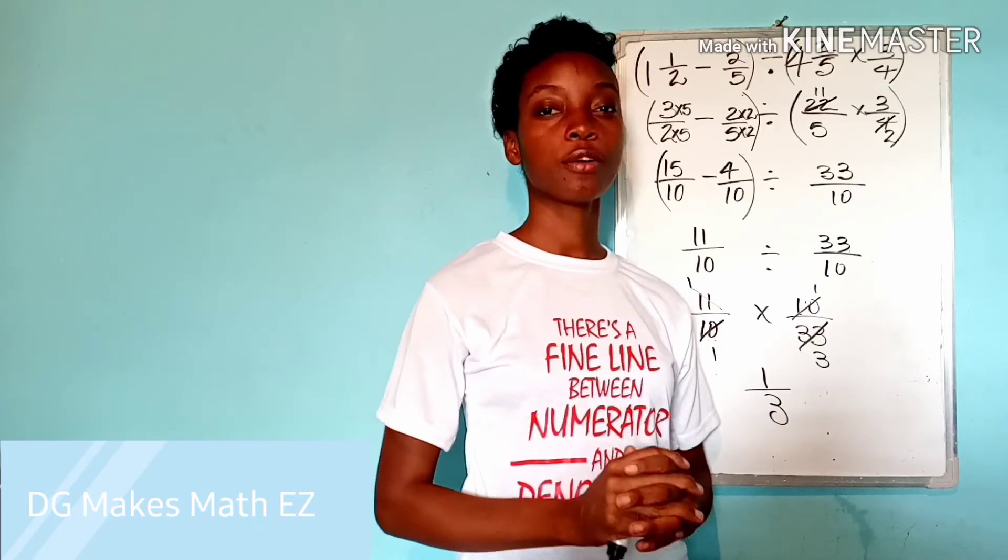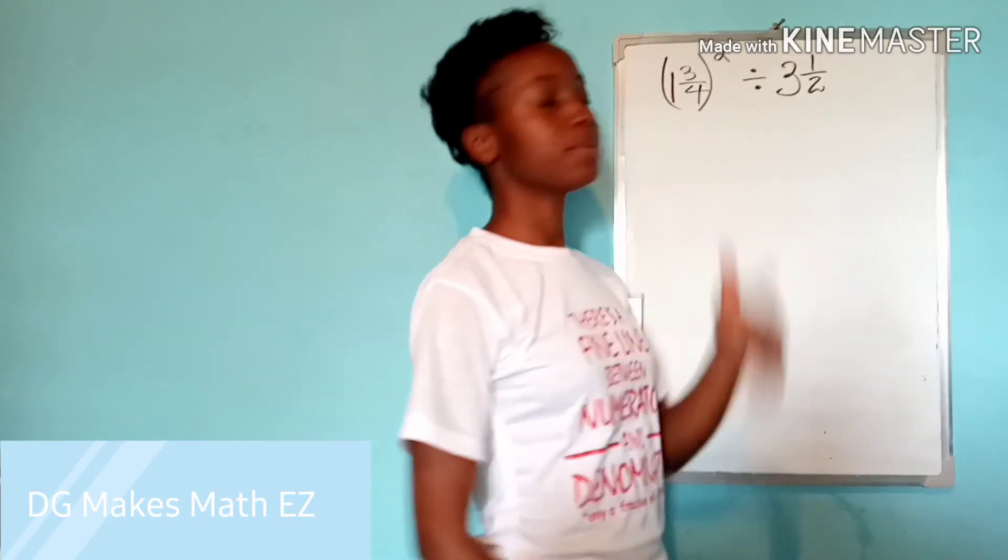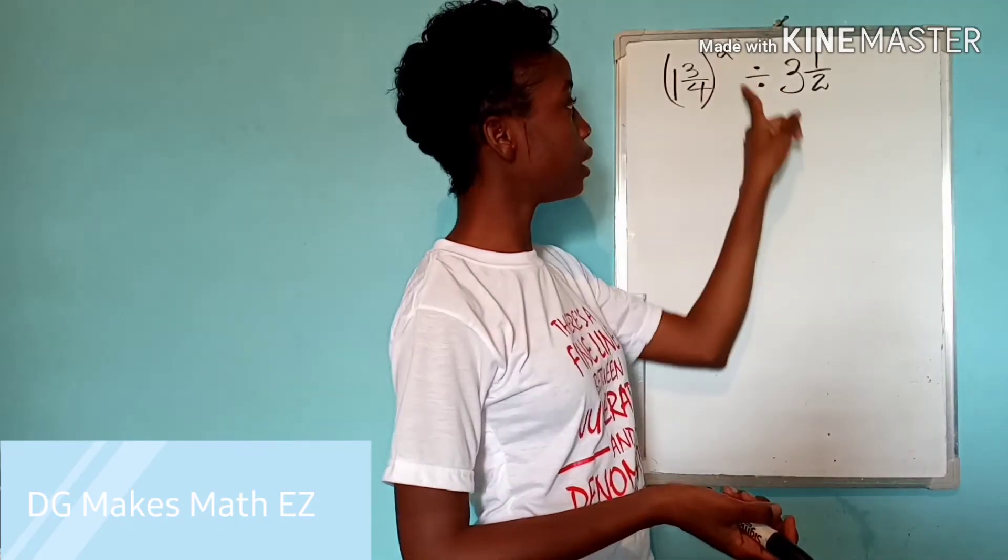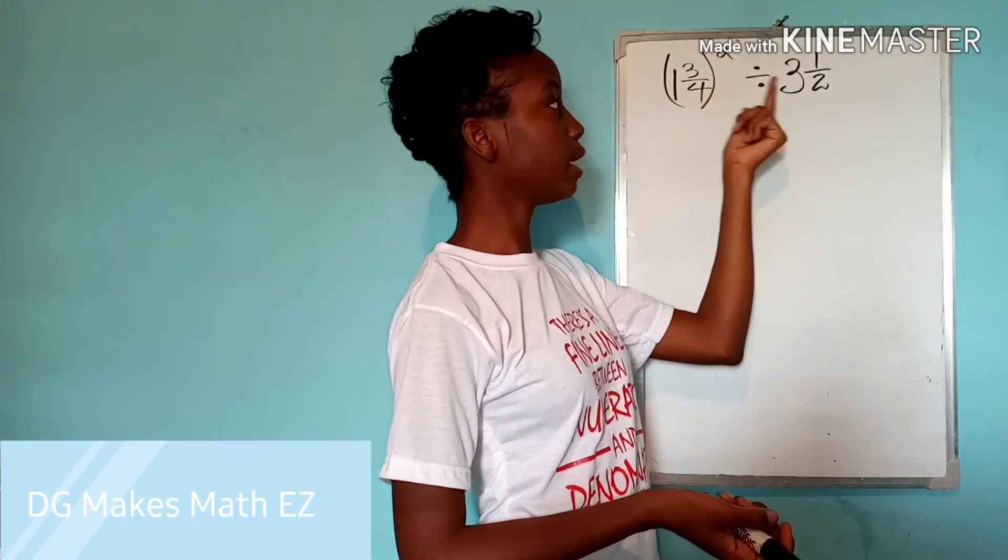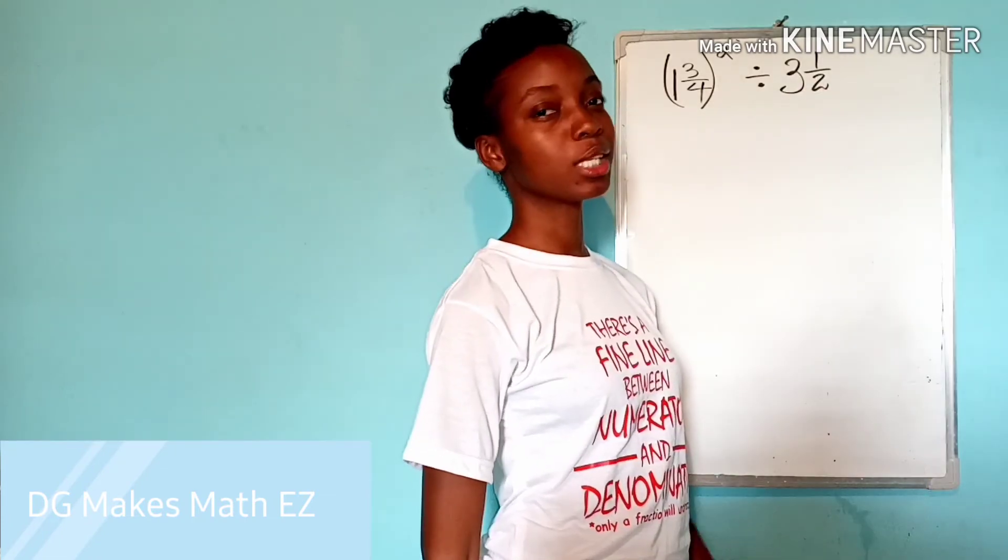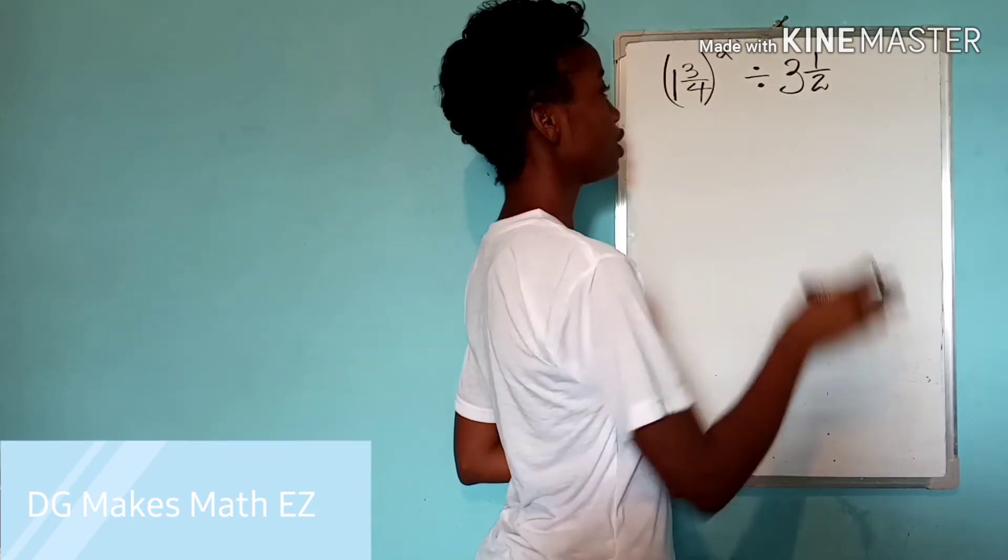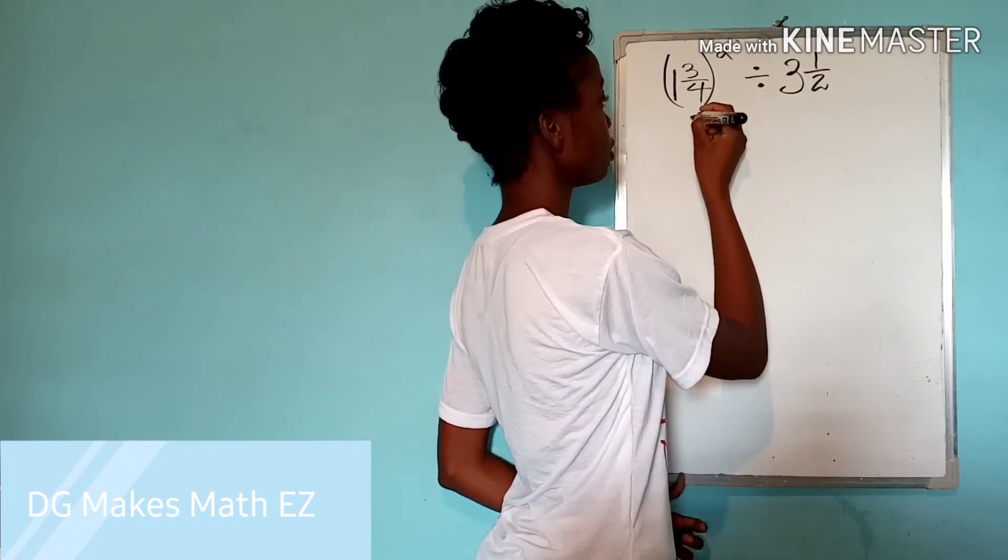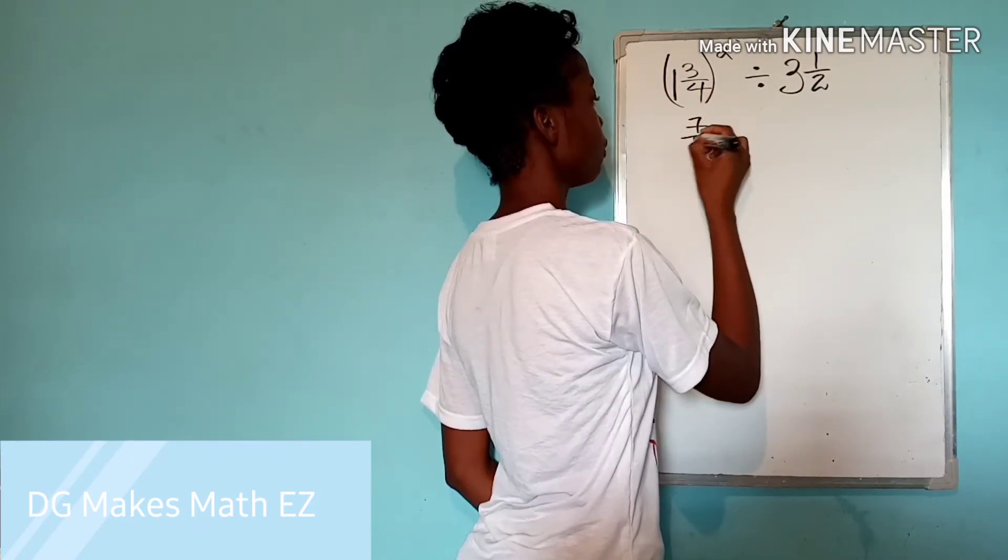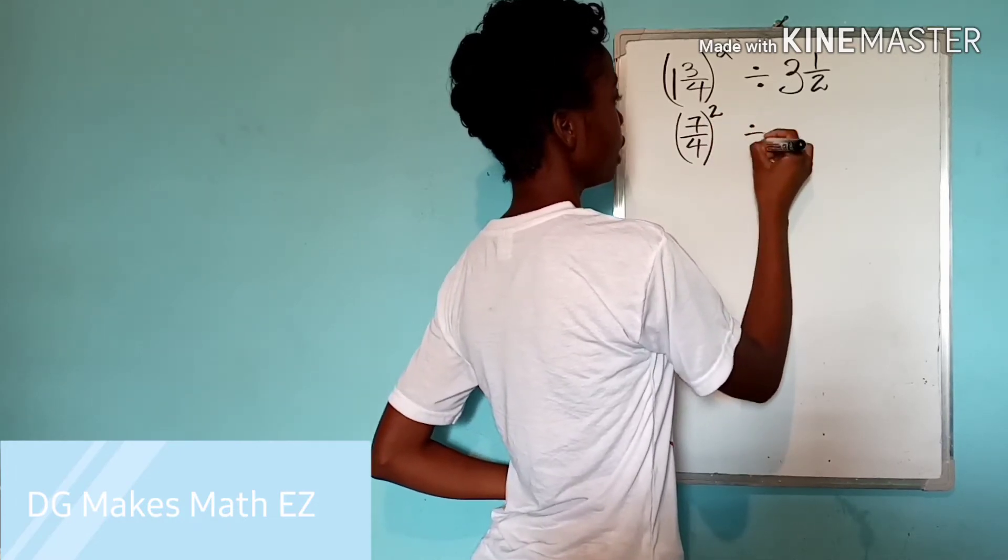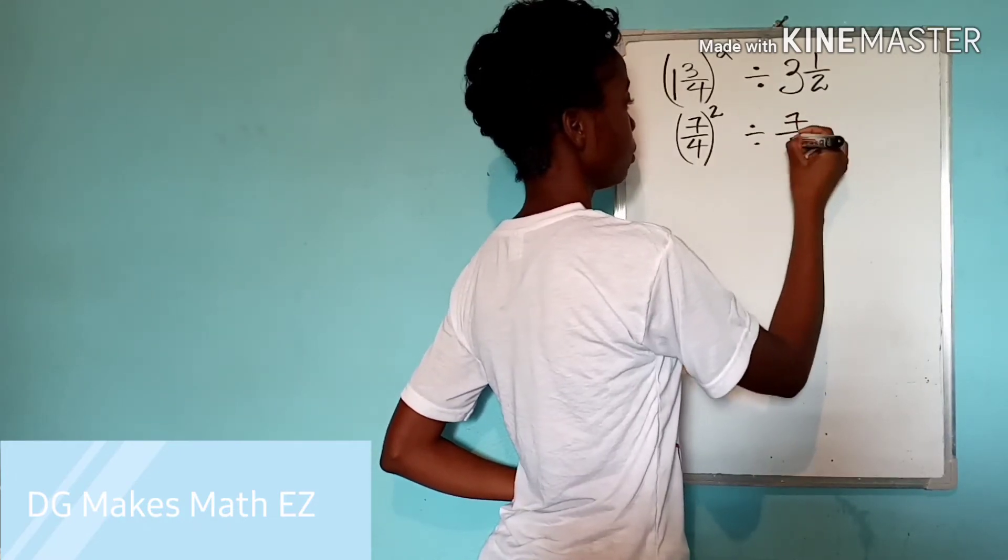In a sense, we have two operations. We have a mixed number here being squared. And then we have to divide that answer by another mixed number. So let's begin. The rules don't change. Let's change our mixed numbers to improper fractions. So this is seven over four. And that is being squared divided by seven over two.